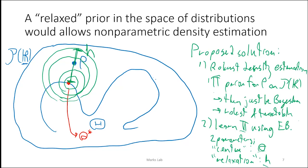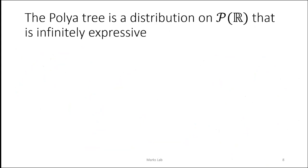This all hinges on a way to actually specify pi that is robust, tractable, and can be described in terms of these two parameters — center and relaxation. And such a distribution is called a Pólya tree. I'll develop this next, starting by sampling from the normal distribution in a slightly unusual way.